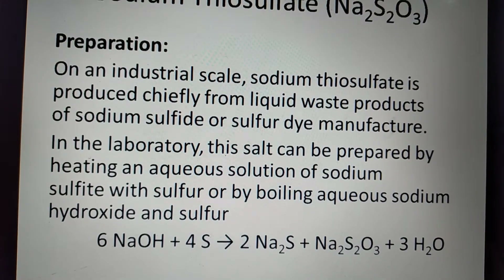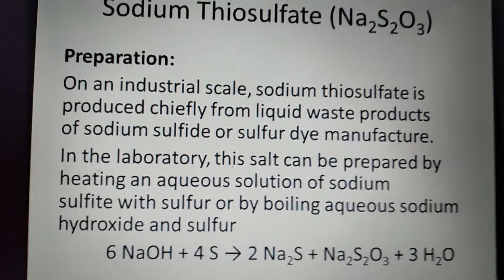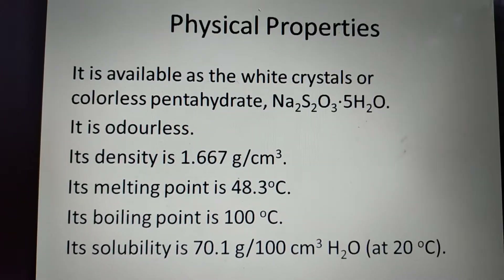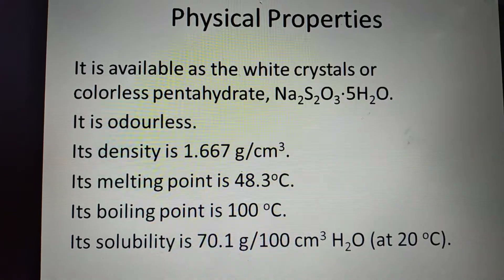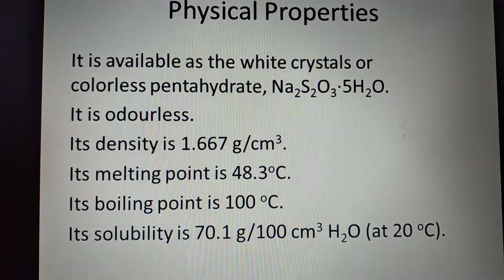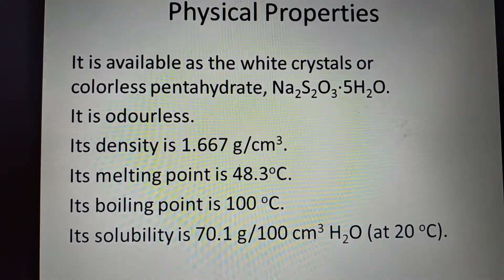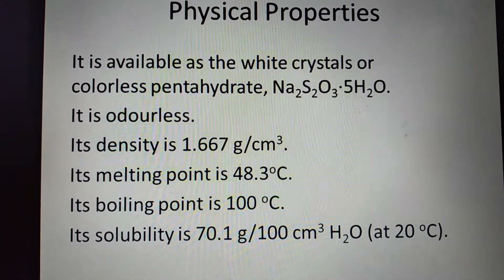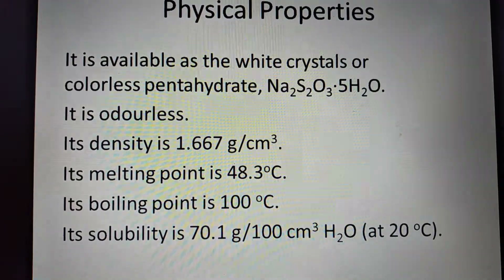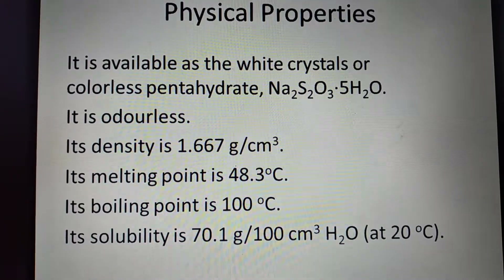The reaction is: NaOH + S → Na₂S + Na₂S₂O₃ + 3H₂O. Physical properties: sodium thiosulfate is available as a white crystalline or colorless pentahydrate. It is odorless. Its density is 1.667 g/cm³.